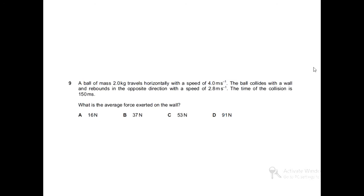MCQ number 9 says that a ball of mass 2.0 kg travels horizontally with a speed of 4.0 m per second. The ball collides with the wall and rebounds in the opposite direction with a speed of 2.8 m per second. The time of the collision is 150 ms. What is the average force exerted on the wall?